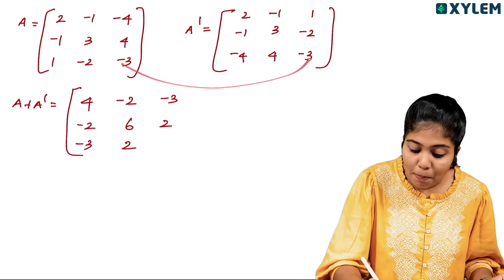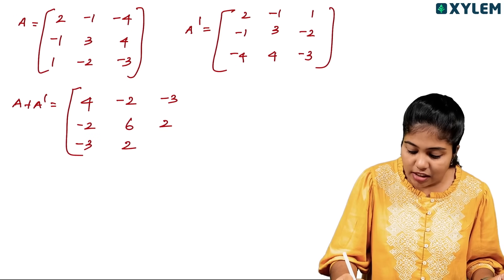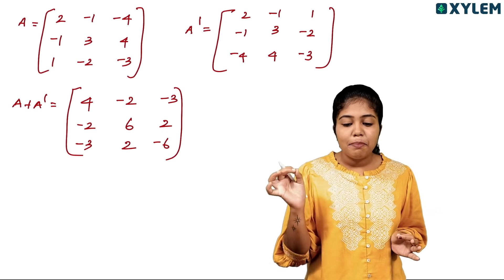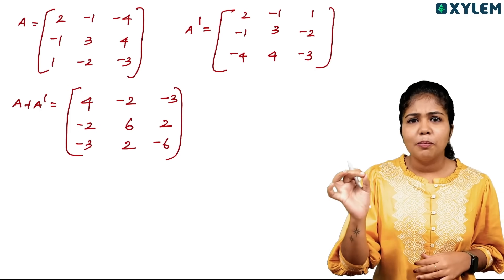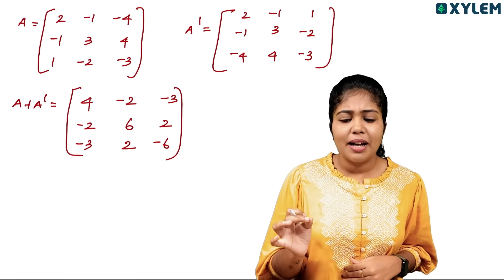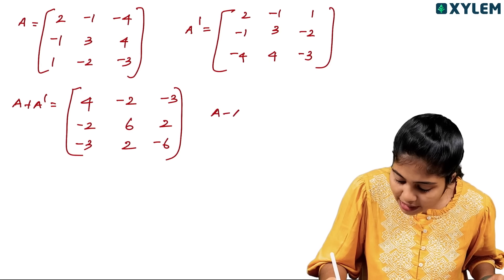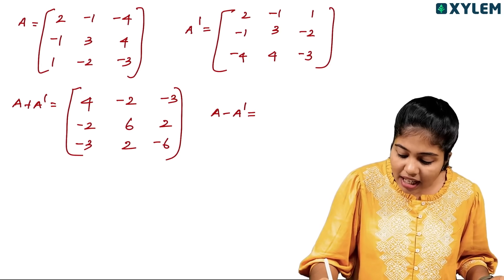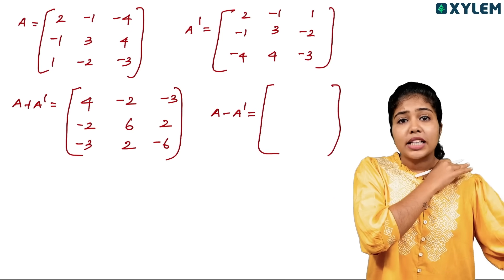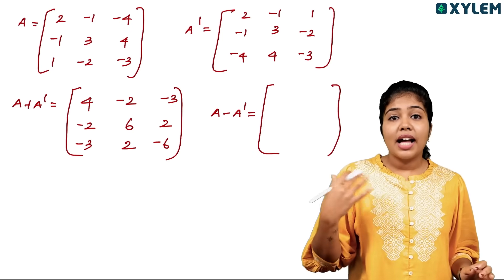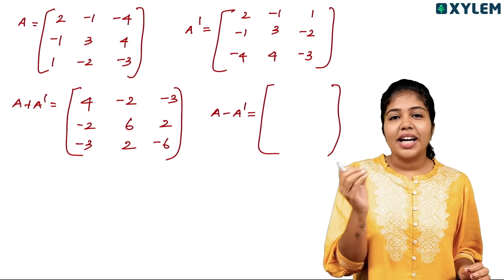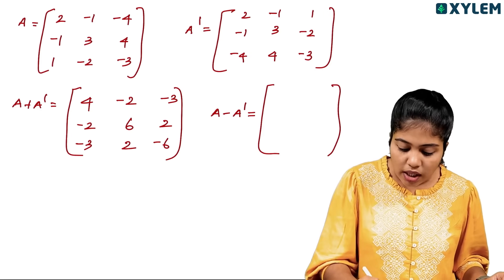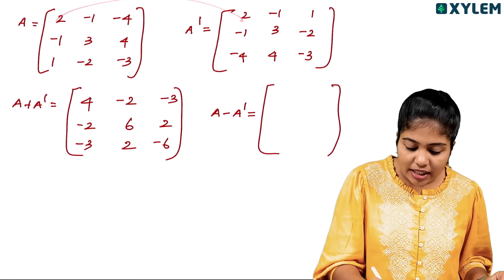Now we compute A plus A transpose. We are giving corresponding elements to add. For example, 2 minus 2 equals 0.